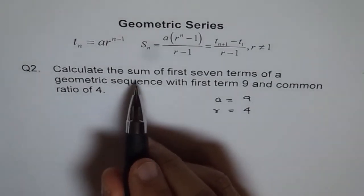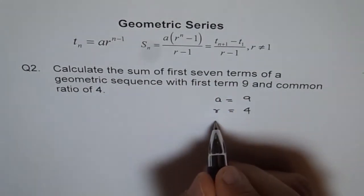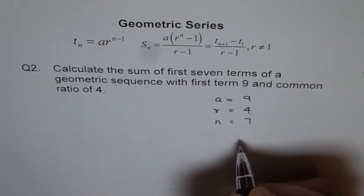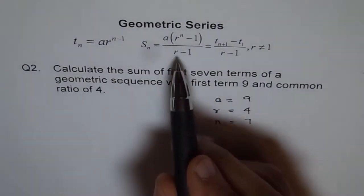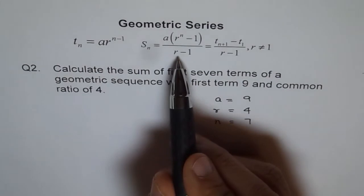We need to calculate the sum of first 7 terms, so N equals 7. When we are given A, R, and N, this is a good formula to use.